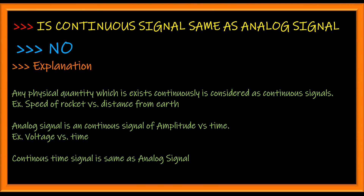A continuous signal is defined as a signal where the x-axis can be any physical quantity, whereas an analog signal is a signal where the x-axis is only time-based.